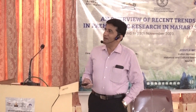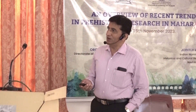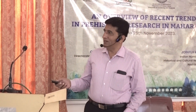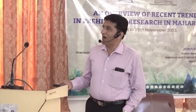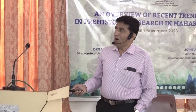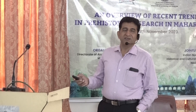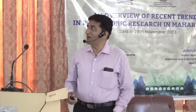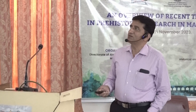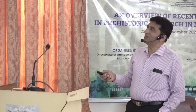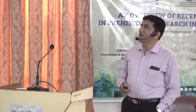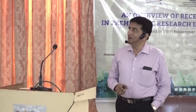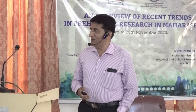Kalsubai is the highest peak of Maharashtra, followed by Harishchandragad, Torna, and Mahabaleshwar. Toranmal is not a peak of the Western Ghats because it is in the Satpuda range at 1155 meters, and Chikhaldara is another hill range in the Satpuda, particularly in the Gavilgad range, having an elevation of 1188 meters.